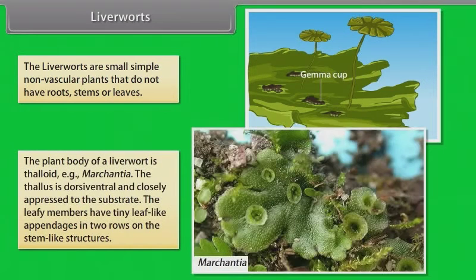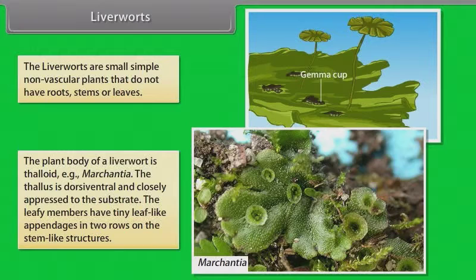The liverworts are small, simple, non-vascular plants that do not have roots, stems or leaves. The plant body of a liverwort is thalloid, example Marchantia. The thallus is dorsiventral and closely appressed to the substrate. The leafy members have tiny leaf-like appendages in two rows on the stem-like structures.